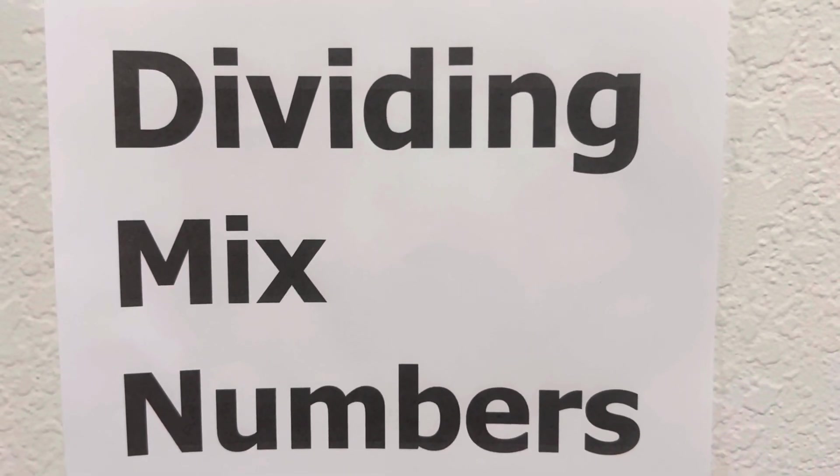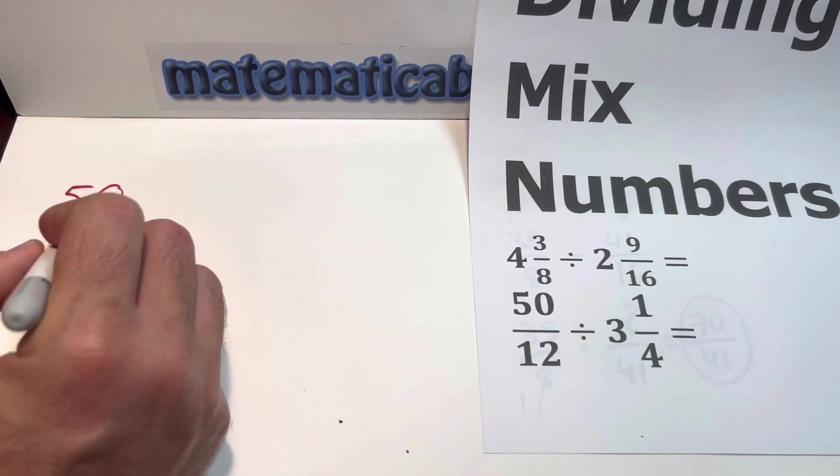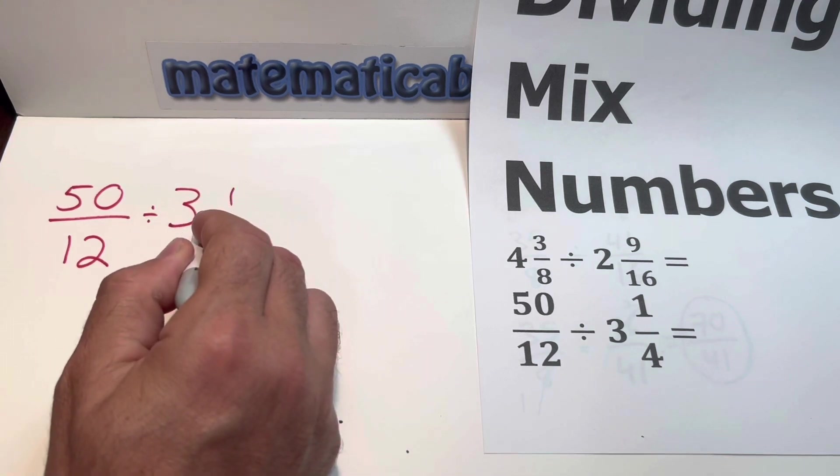Dividing mixed numbers. 50 over 12 divided by 3 and 1 fourth.